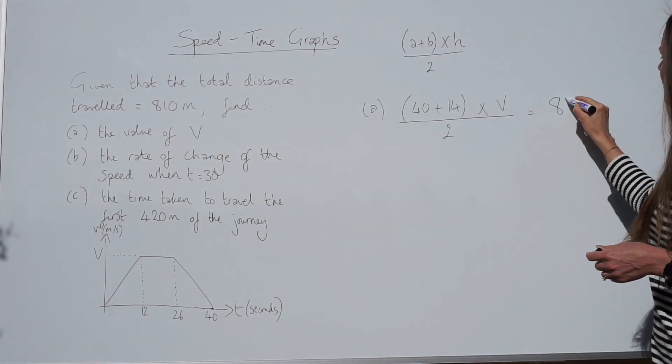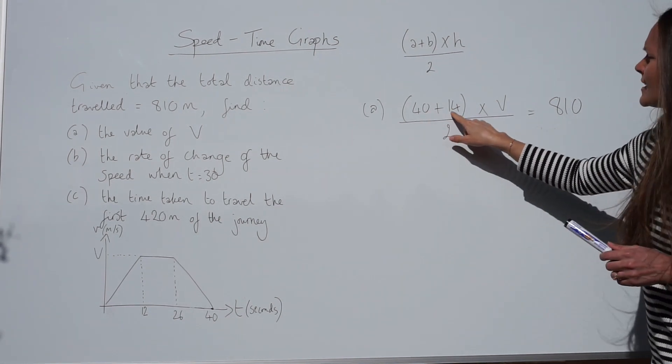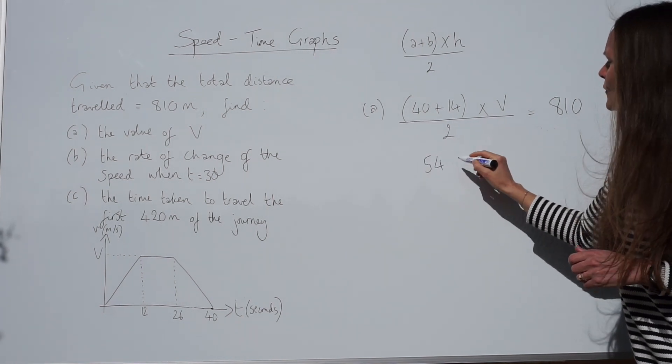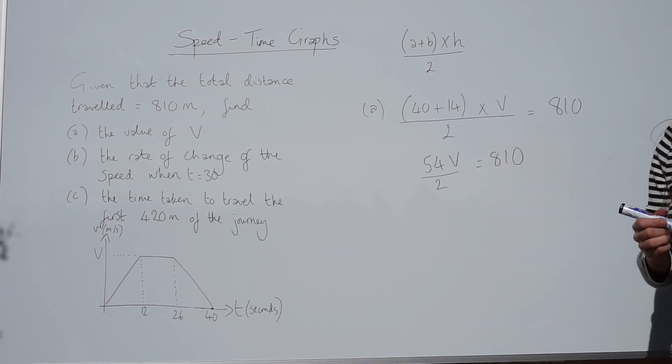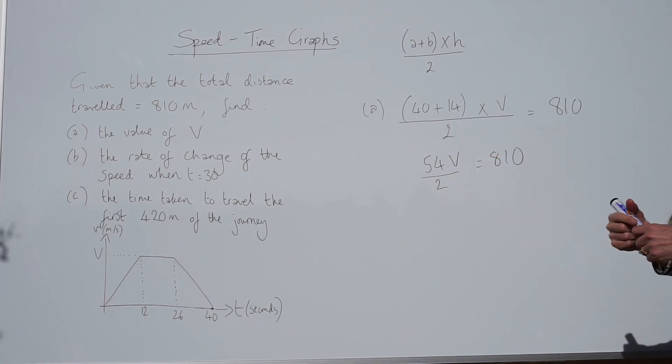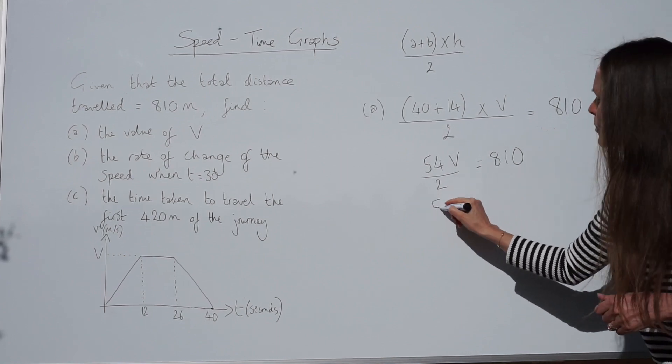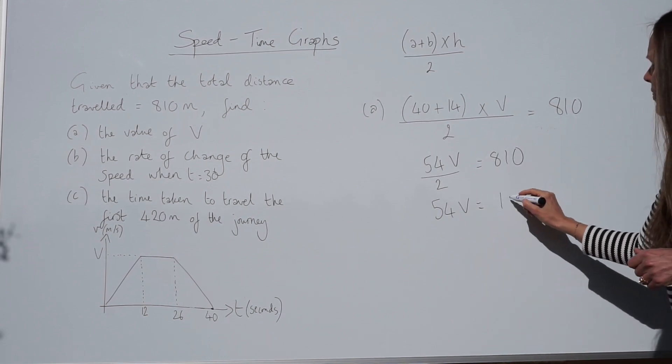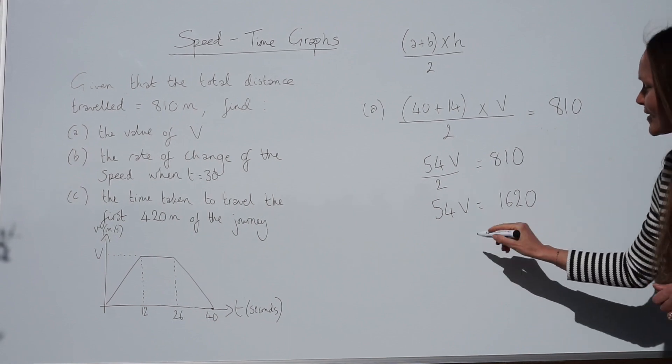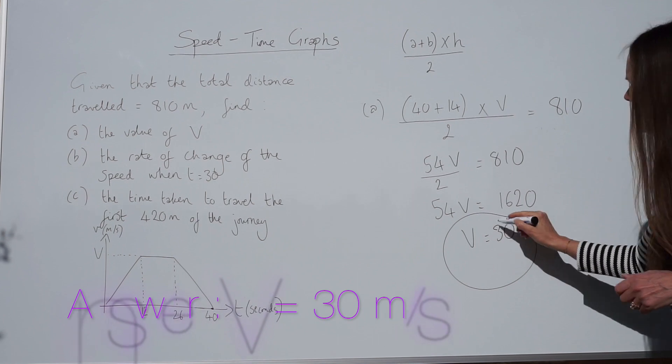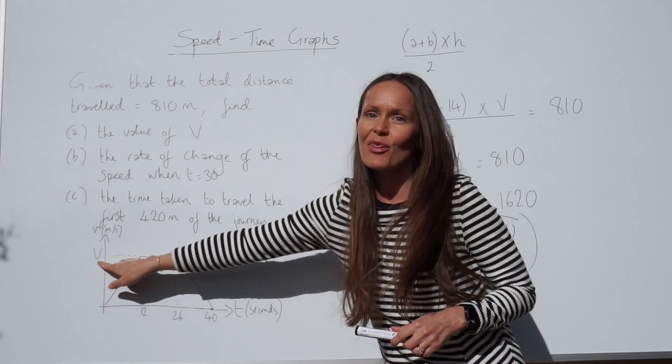So now we have an equation, and we can solve this to find out what the value of V is. 40 plus 14 is 54, so I've got 54V over 2 equals 810. Then to solve this equation, you can either simplify here, or you could multiply by 2 first. So if I multiply by 2 on both sides, I get 1620. And then if I divide by 54 on both sides, I get V is equal to 30. So we found the value of V. The maximum velocity in this question is 30.